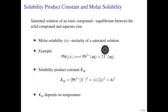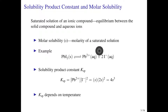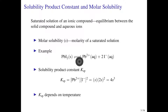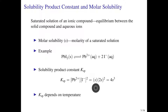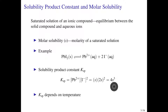Likewise, you will form 2s moles per liter of iodide because of the stoichiometric coefficient. There's a one-to-one relationship between lead iodide and the lead²⁺ ion, and a one-to-two ratio between the compound and iodide. We take that into account when we work with the KSP expression. Substituting in the solubility for the concentrations gives us KSP = (s)(2s)² which simplifies to 4s³. So there's a mathematical relationship between the KSP and the molar solubility.